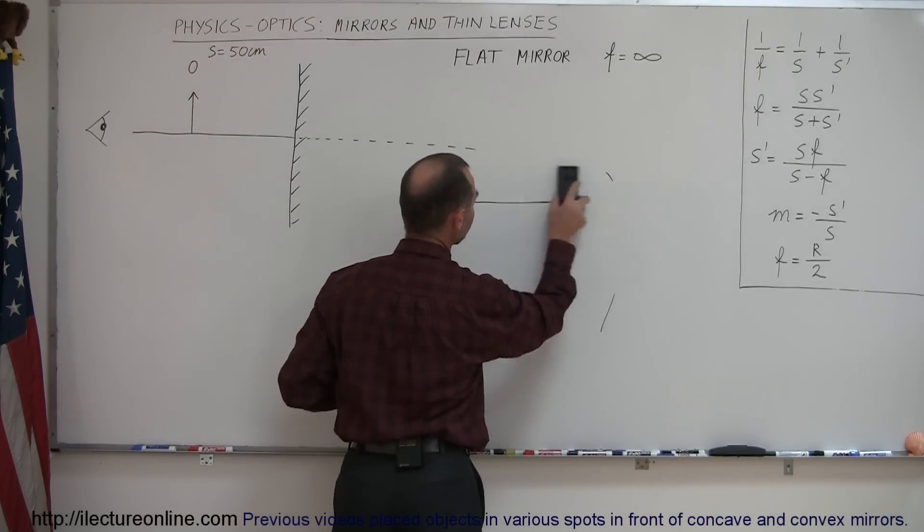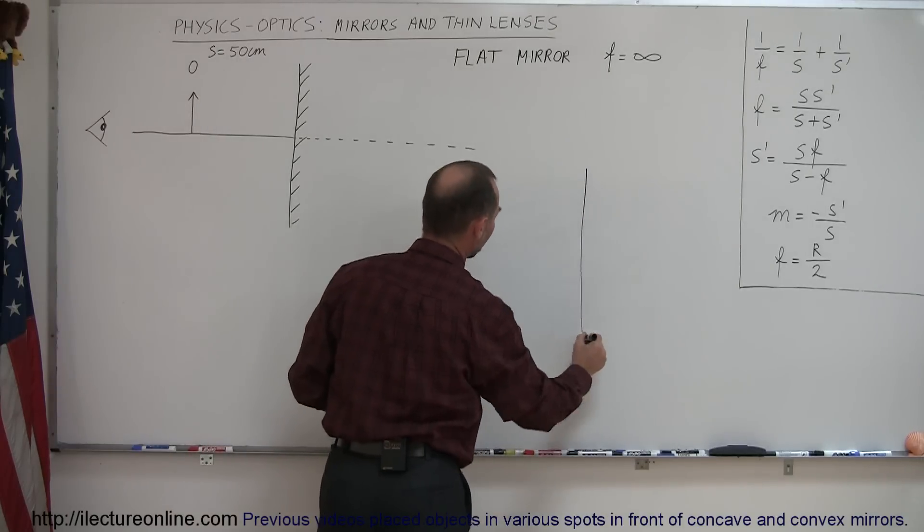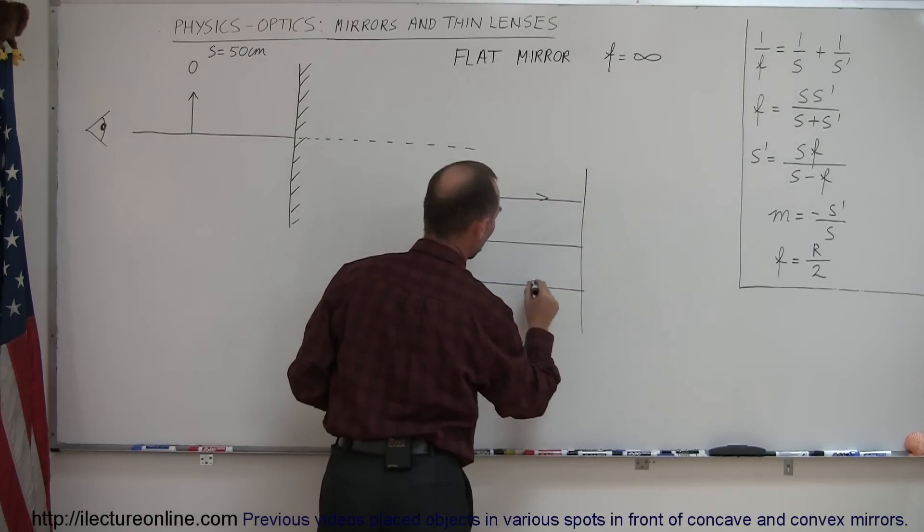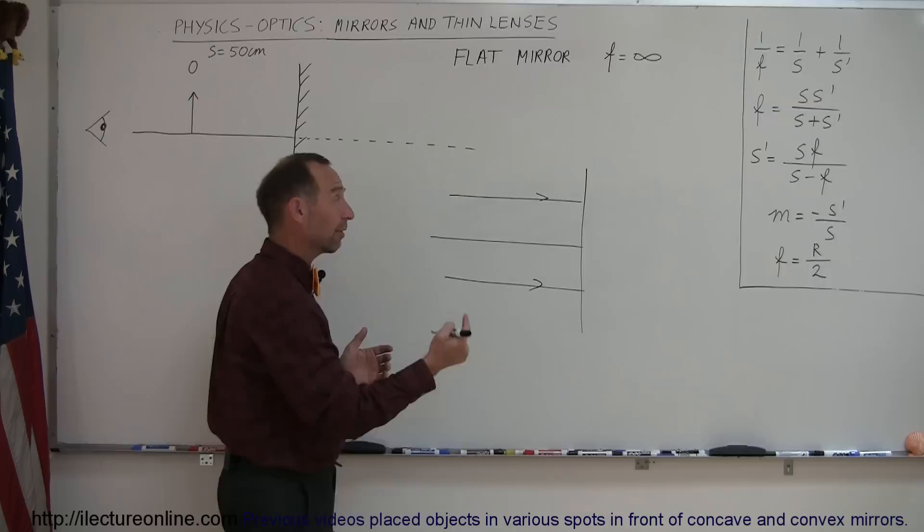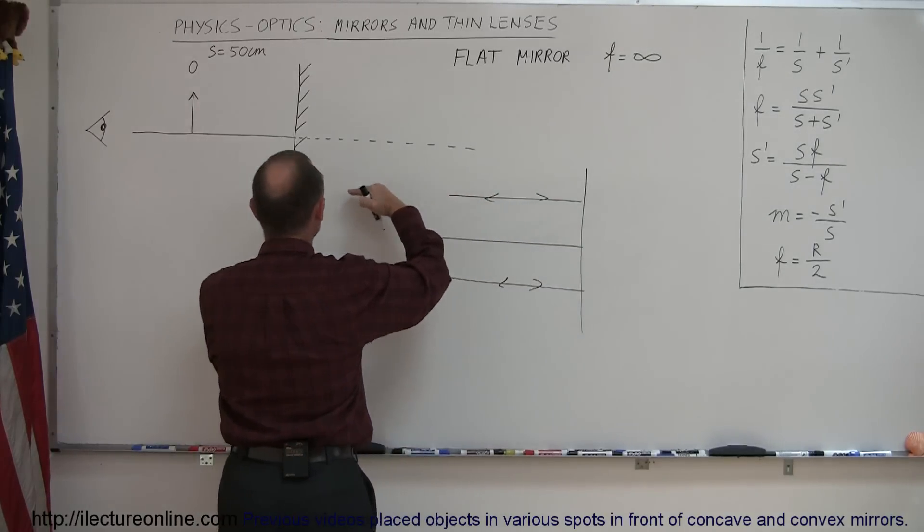If we now look at a flat mirror, we can see that if this is the normal to the mirror and we shoot rays towards the mirror, they are going to reflect back, but they're going to reflect back exactly the same direction where they came from and those two rays will never converge.